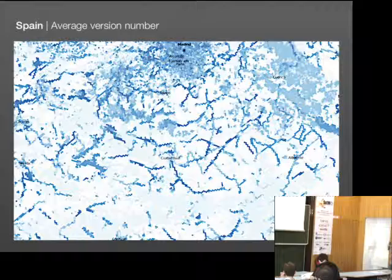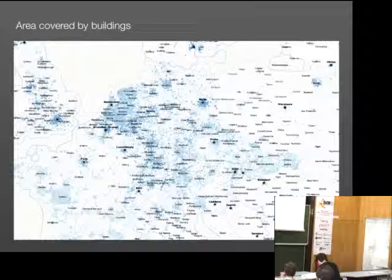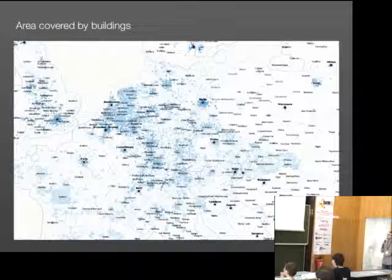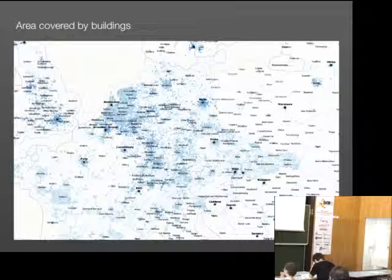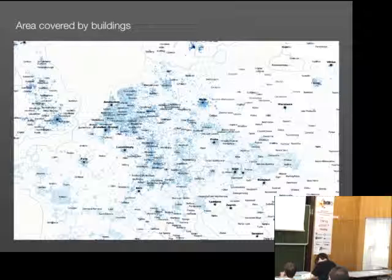Also very interesting to look at, since Bing aerial maps have been cleared for mapping use, is the area covered by buildings. We calculated for each cell the area covered by buildings. The Netherlands is very well mapped, and Germany has a lot of buildings already mapped in urban areas. But if you compare it to Poland or Southeastern Europe, a lot of building mapping still has to be done.